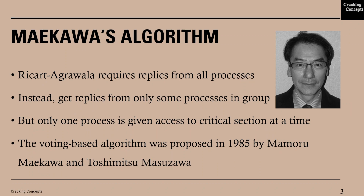In Ricart-Agrawala, a reply is required from all the processes in the group. In Maekawa's algorithm, it gets a reply only from some processes in the group, but it also ensures that only one process is given access to the critical section at a time. This voting-based algorithm was proposed in 1985 by Mamoru Maekawa and Toshimitsu Mesuzawa.